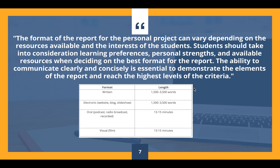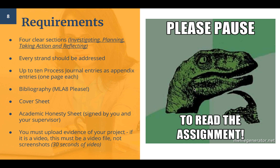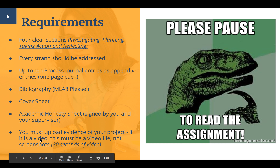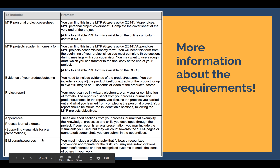However, if you do want to try a different format, please book an appointment with me. The requirements are: four clear sections based on the objectives, every strand must be addressed, up to ten process journal entries at the end (one page each), your bibliography in MLA 8 format, a cover sheet, and your academic honesty sheet. At the end, you'll also upload evidence, which can be 30 seconds of video or five photographs. If it is a video, it can't be a screen recording — it has to be part of the actual video.